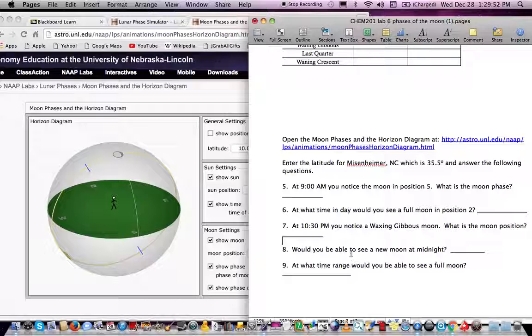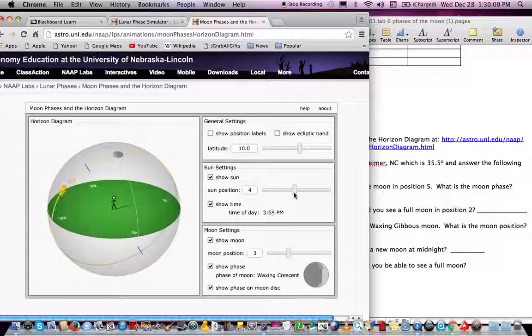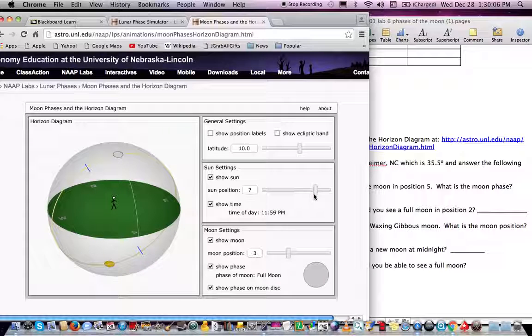Would you be able to see a new moon at midnight? All right, so what we can do is we can adjust our time here to midnight. It's midnight there. And then what we can do is we can change the moon position to new moon. And we can see that he wouldn't be able to see the new moon. He can only see a new moon if it's above the horizon. Actually, in any position, you can only see the new moon, or any moon if it's above the horizon. In this case, the new moon is well below the horizon, so he wouldn't be able to see the new moon there.